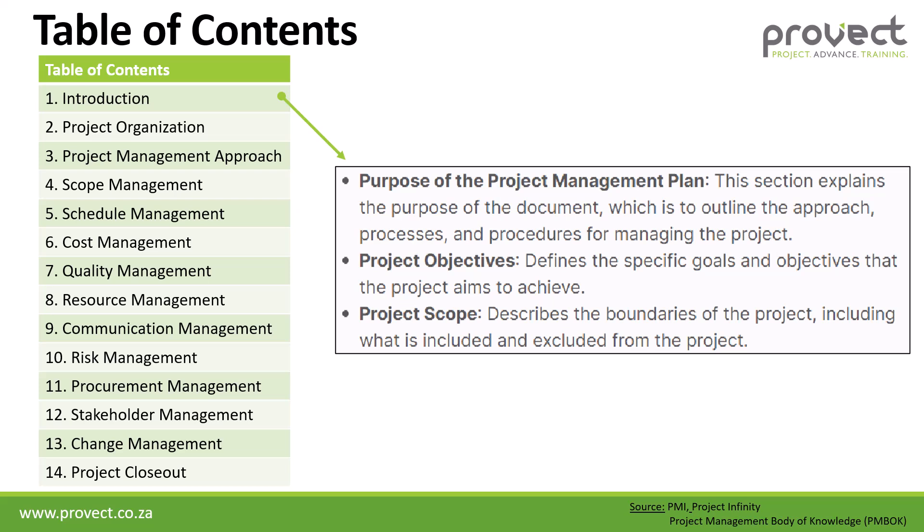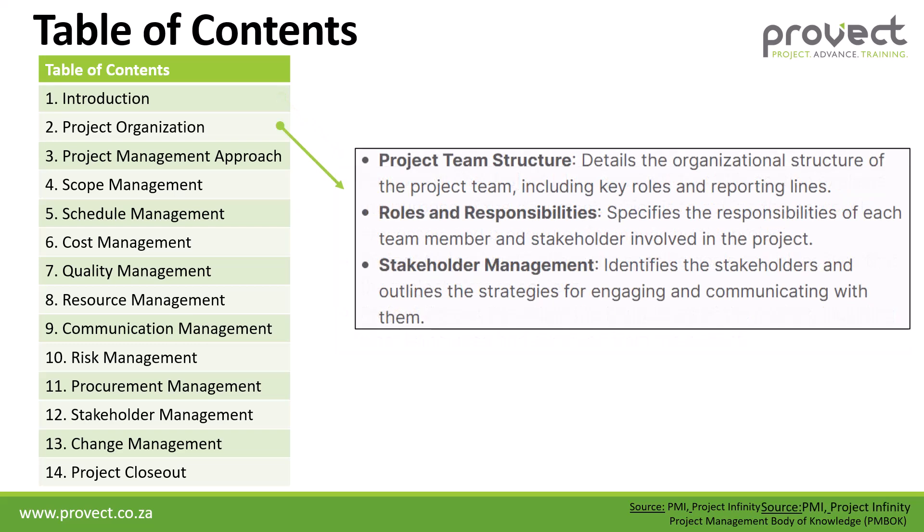The second chapter is our project organization. That covers the project team structure, which details the organizational structure of the project team, our roles and responsibilities, specifying the responsibilities of each team member and stakeholder involved in the project, and then our stakeholder management, identifying stakeholders and outlining the strategy for engaging and communicating with them.